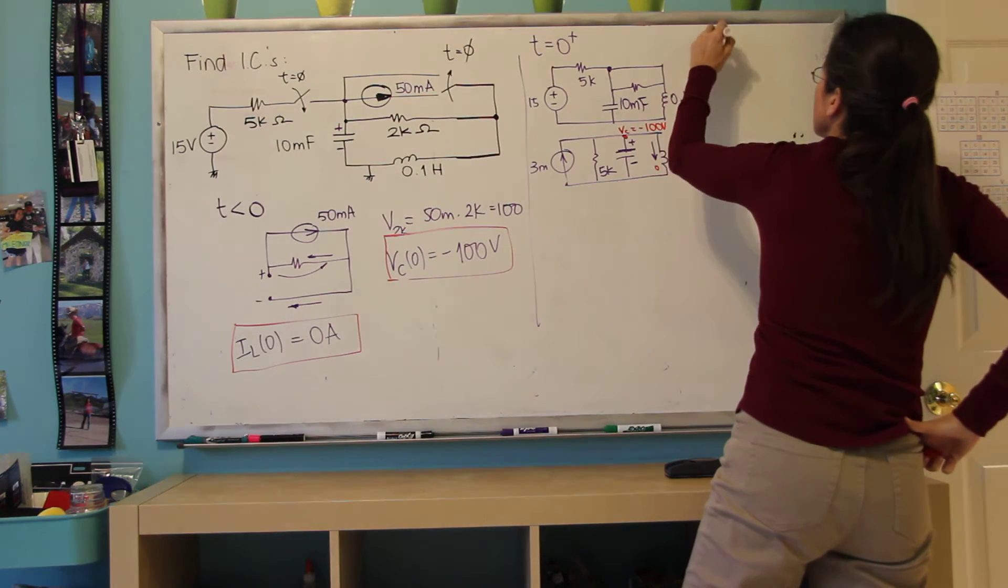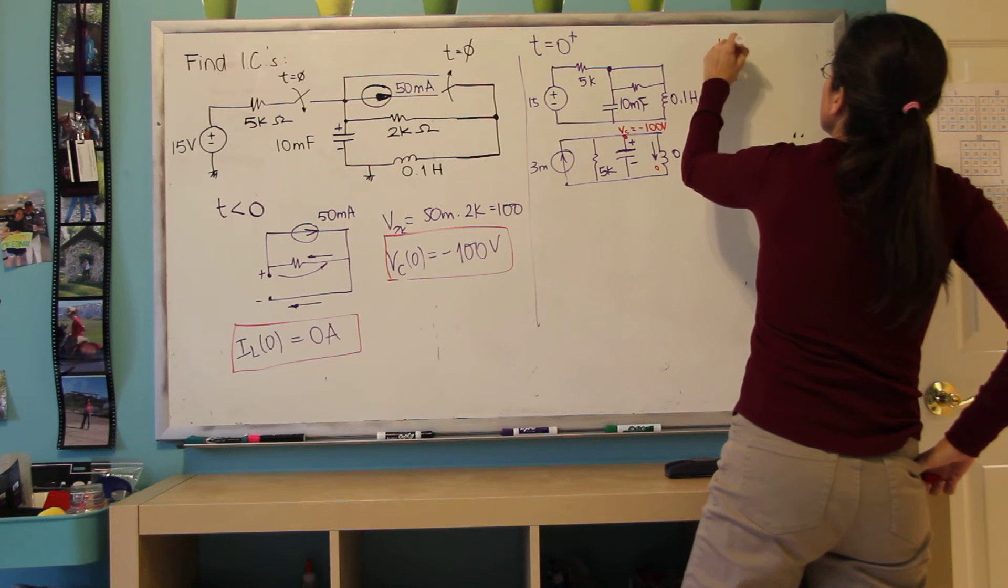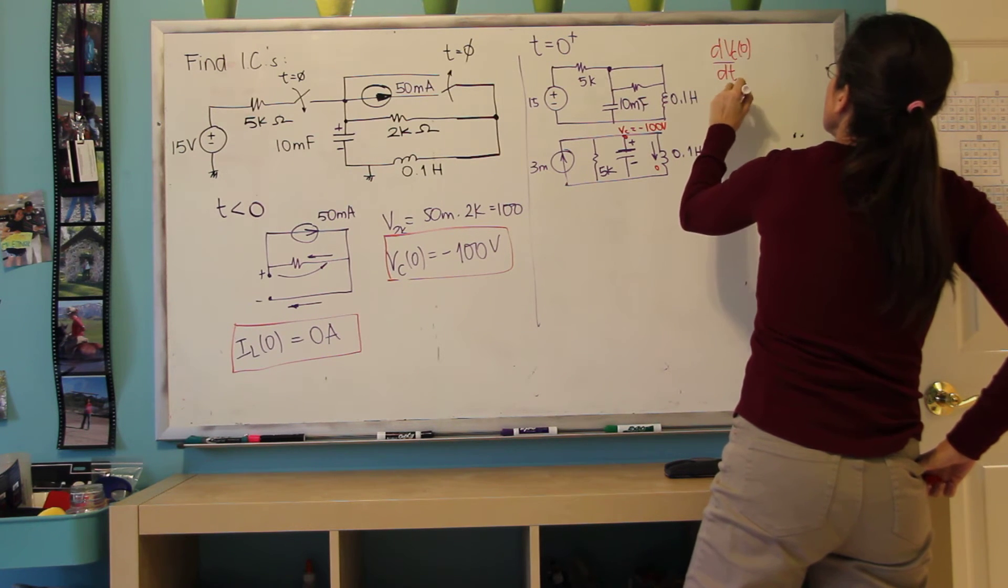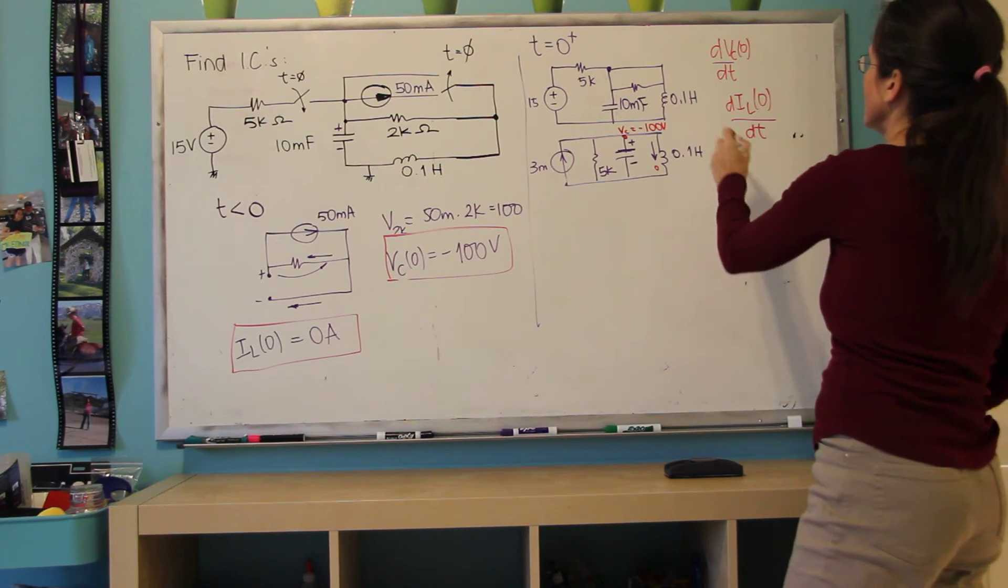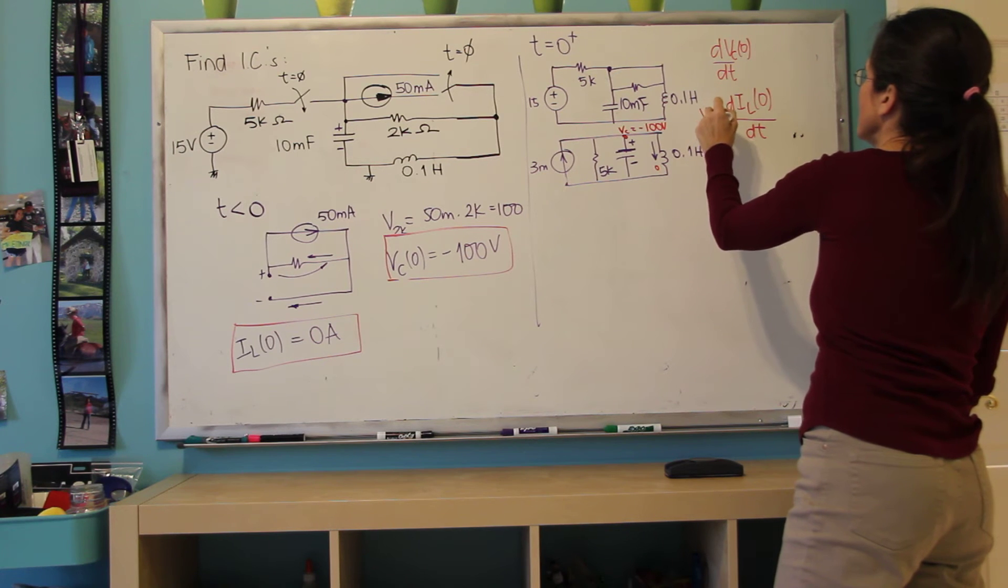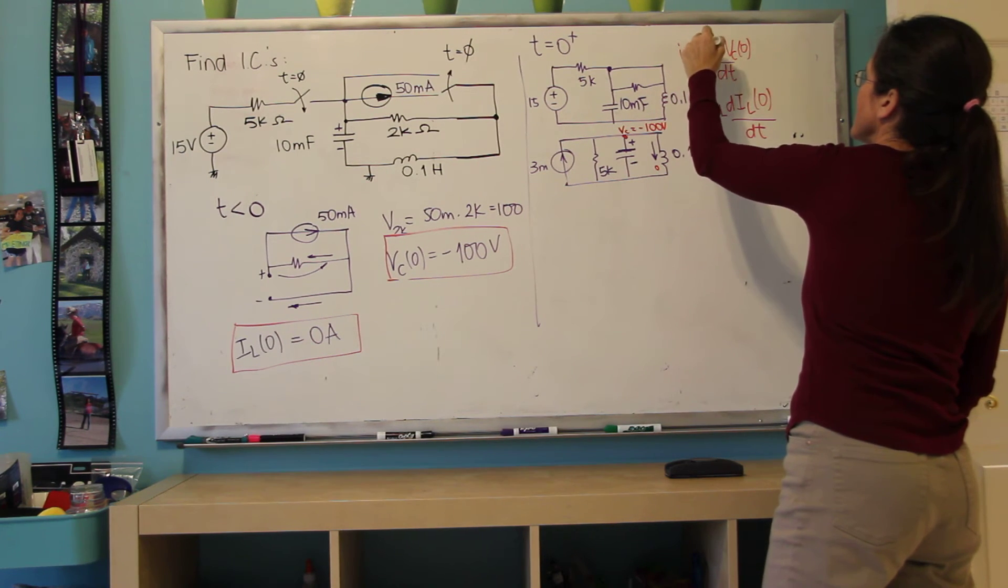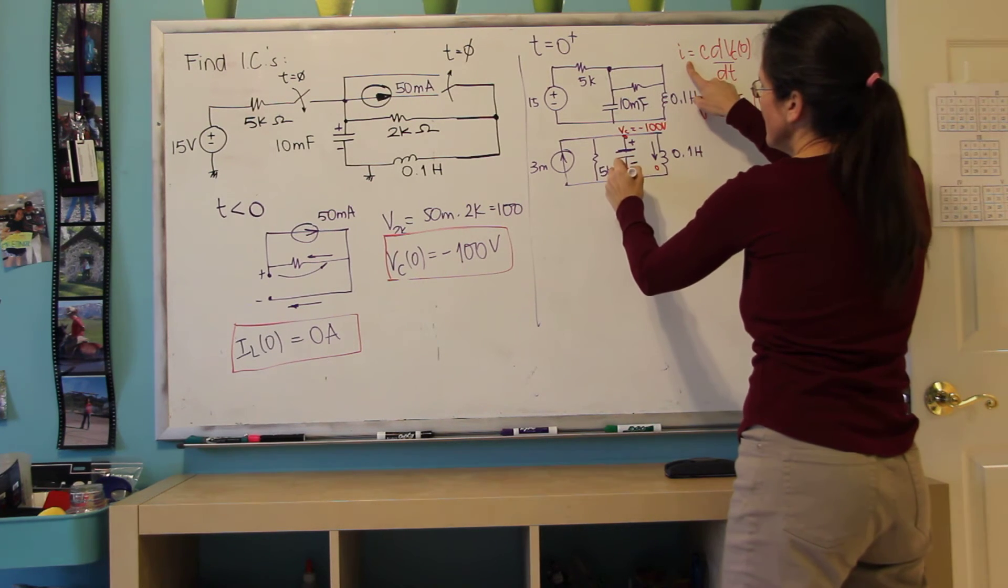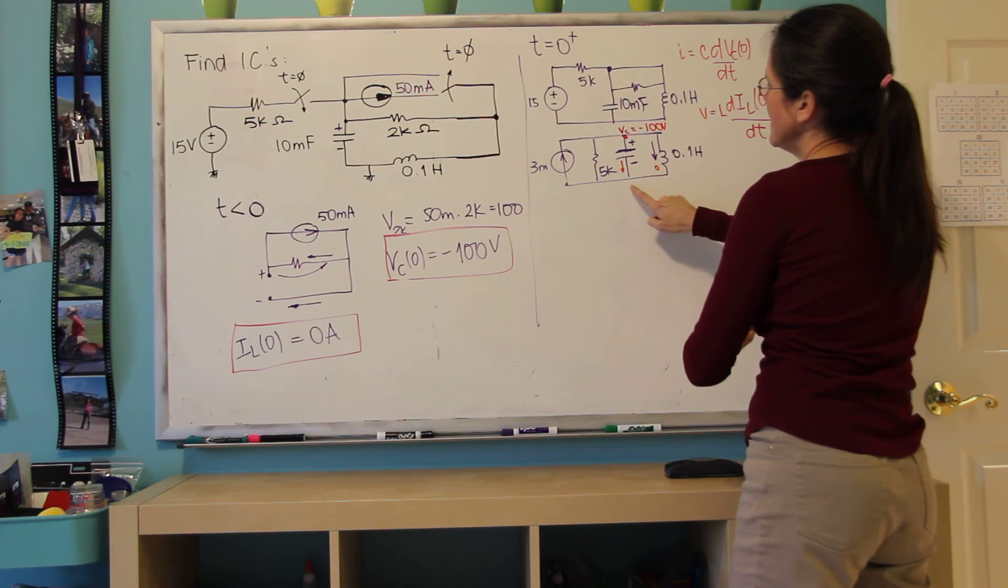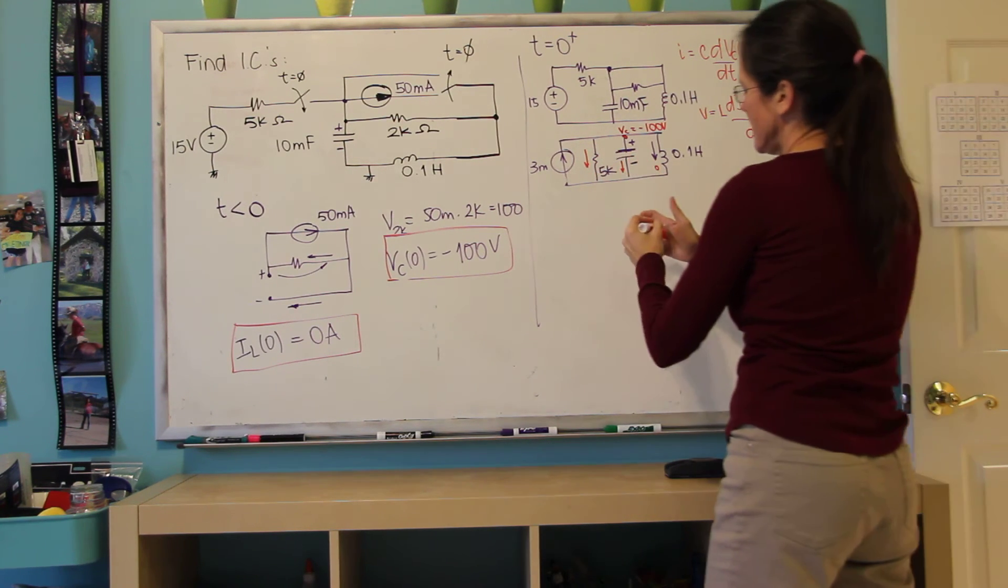And my interest is to find dvc at zero dt and dil at zero dt. And I know that V equals L di/dt and I equals C dv/dt.